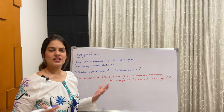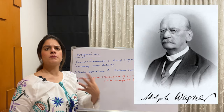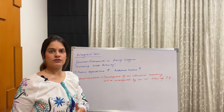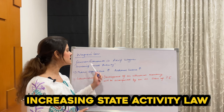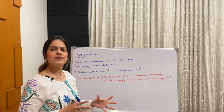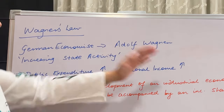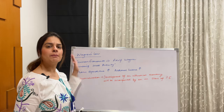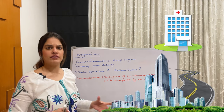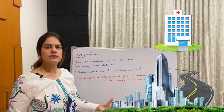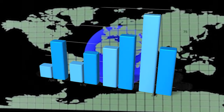As the name suggests, this law was given by German economist Adolf Wagner, who first observed this law in his own country Germany, and then in other countries. This law is also known as the 'Increasing State Activity Law.' It states that as the national income of a country increases, public expenditure is bound to increase — that is, government expenditure on public goods and public services will definitely increase as national income rises.